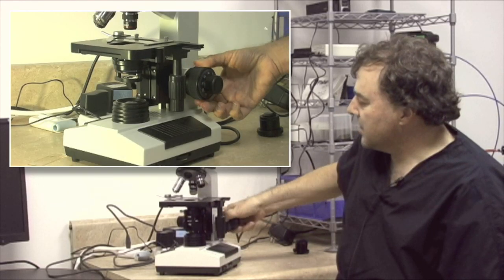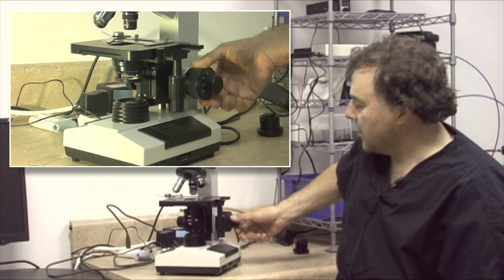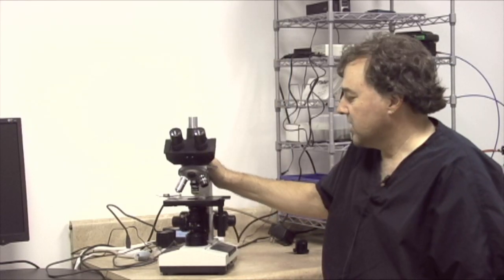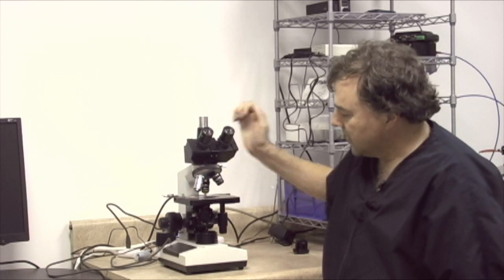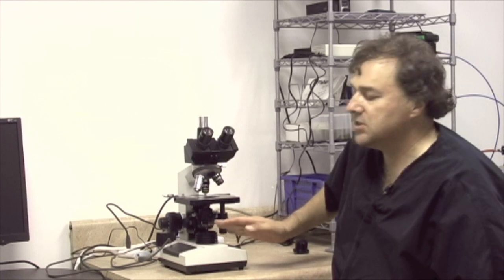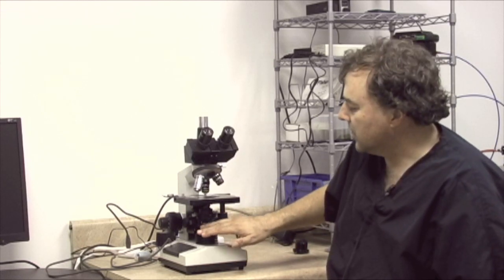We move the stage up and down with the coarse focus knob and with a fine focus knob. The sub-stage condenser has several different adjustments that we can make. There may be filter holders. There may be some accessory lenses which are used to help the light.